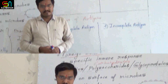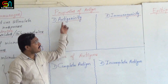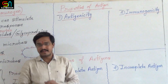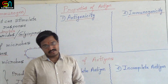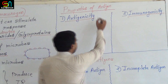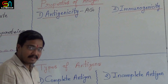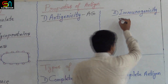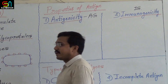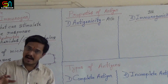After getting one idea about antigens, now let us see what are the properties of antigens. Antigens have two properties. Number one is antigenicity — in short, AG. The second property of antigens is immunogenicity — in short, IG. So there are two properties: AG and IG, antigenicity and immunogenicity.